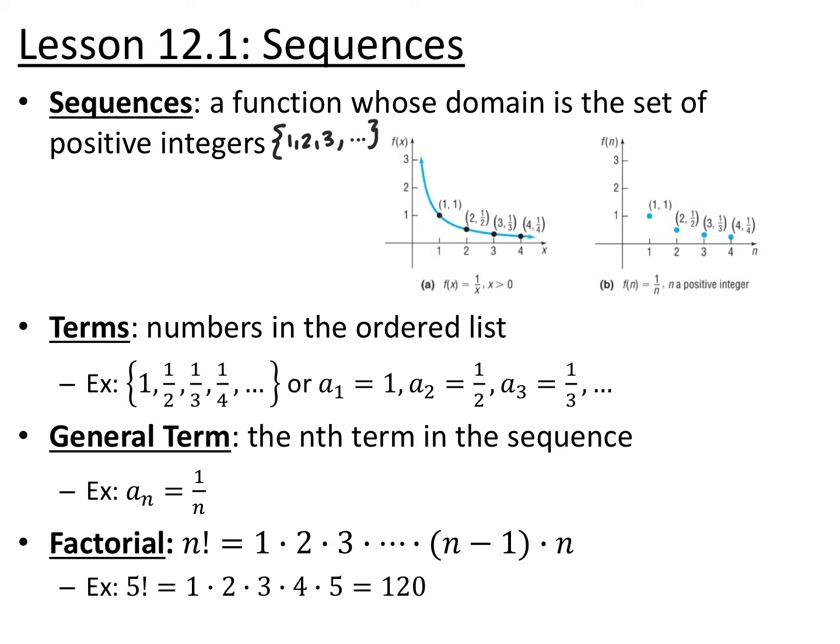Every once in a while we'll include 0 — it kind of depends on the context — but no decimals, fractions, and no negative numbers. So for example, if you look at just the function 1 over x for positive x's, this would be the function and you have everything in between. If we look at the sequence f of n equals 1 over n, then it's only the specific points where n is an integer.